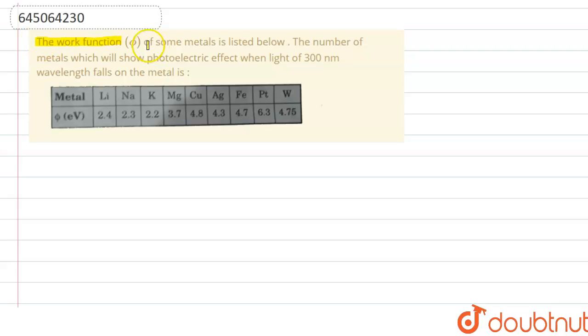The work function of some metals is listed below. We need to find the number of metals which will show photoelectric effect when light of 300 nanometer wavelength falls on the metal. So let's find out which metal will show photoelectric effect and which will not when this 300 nanometer light falls on them.